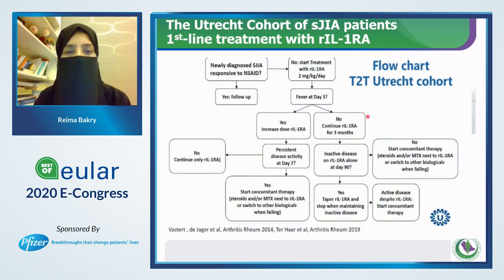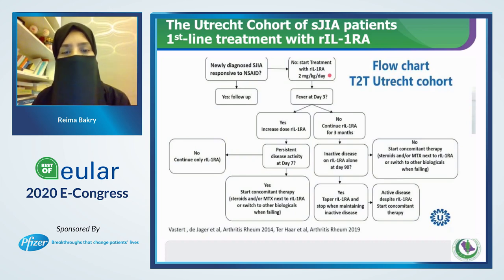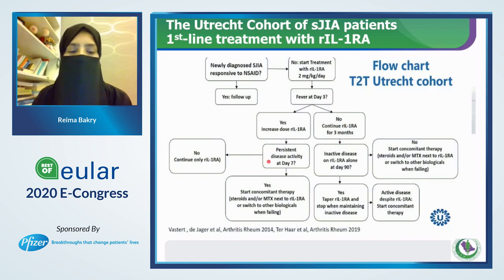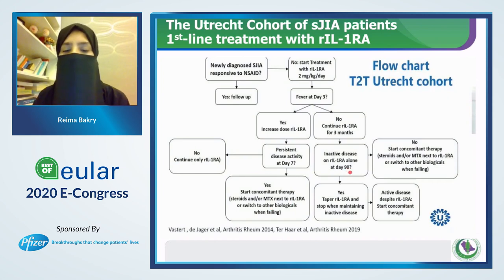A reminder of the systemic JIA treat-to-target strategy: patients were started on NSAIDs initially, and after two days, if persistent fever, anakinra was started at 2 mg/kg/day. If fever persisted after three days, the dose was doubled. If fever resolved, the same dose was maintained for three months. If the patient still had fever on day seven, a concomitant therapy of steroid or methotrexate was added, or they could switch to another biologic. On day 90, if still active or flaring, concomitant therapy was also started.